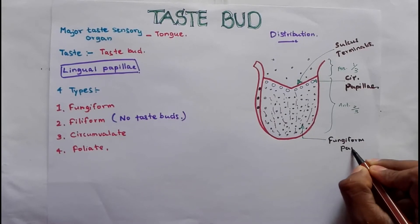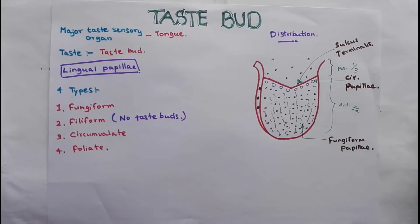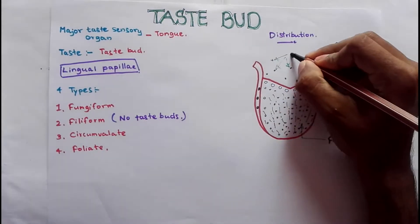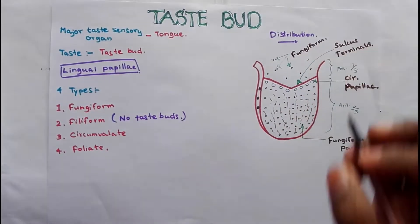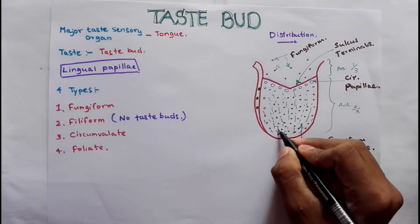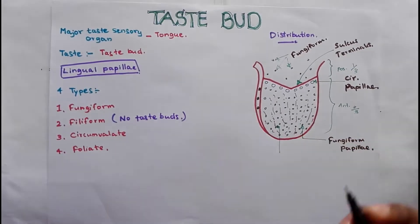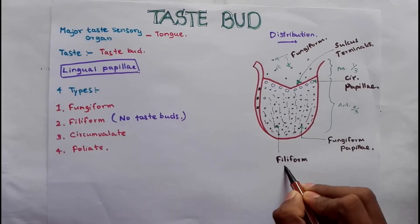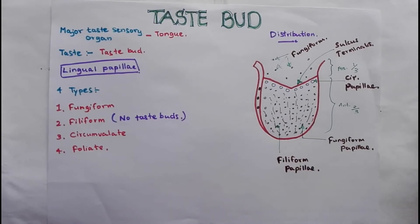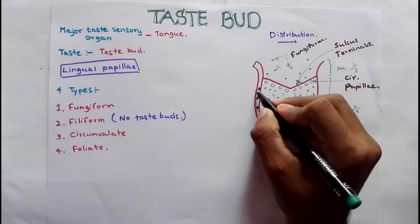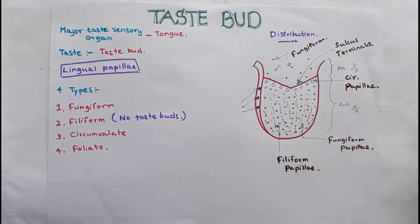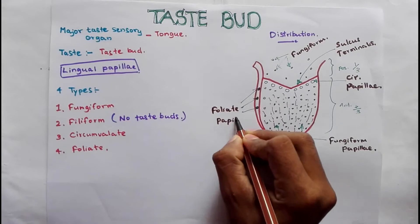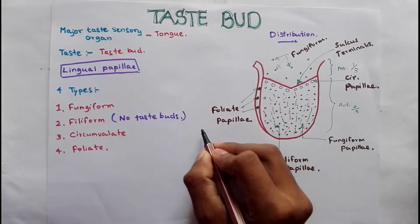Just anterior to the sulcus terminalis, circumvallate papillae are located, and on the anterior two-thirds fungiform papillae can be seen. They can be seen on the posterior one-third also but less abundant. In between the fungiform papillae we can see filiform papillae. On the lateral sides of the tongue we can see foliate papillae, and they can only be seen in childhood.